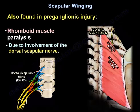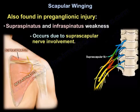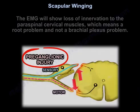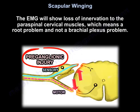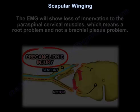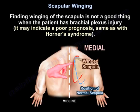Also, rhomboid muscle paralysis occurs due to involvement of the dorsal scapular nerve. The EMG will show loss of innervation to the paraspinal cervical muscles, which means a root problem, not a brachial plexus problem. So finding winging of the scapula is not a good thing when the patient has brachial plexus injury. It may indicate a poor prognosis, the same as Horner's syndrome.